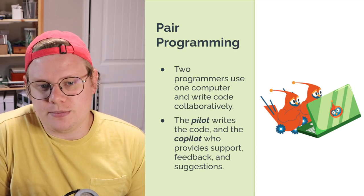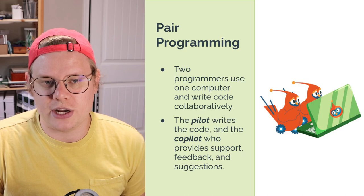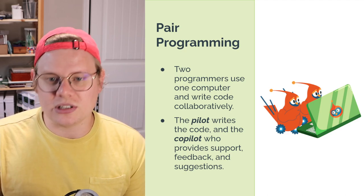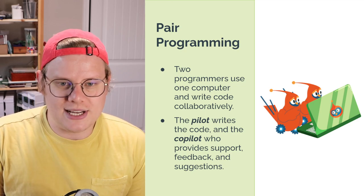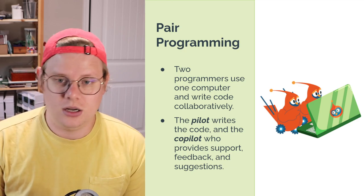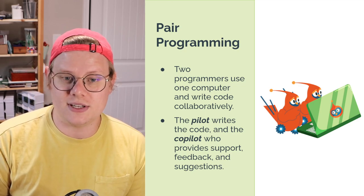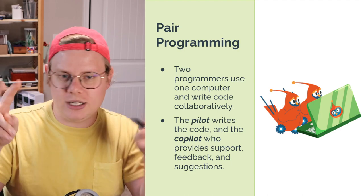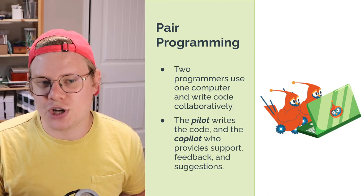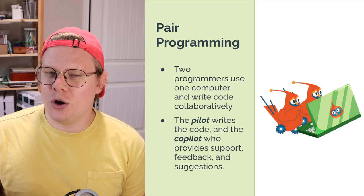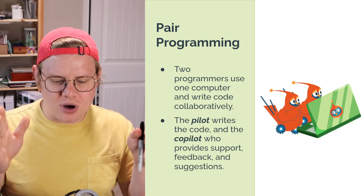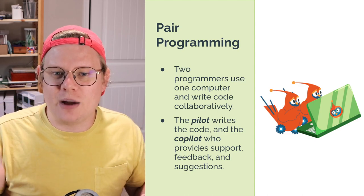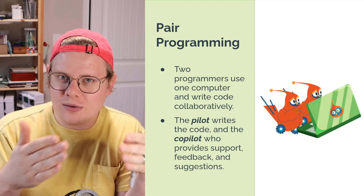A second collaboration paradigm useful for computing educators is pair programming. This is where two programmers use one computer and write code collaboratively. Usually, you would assign students roles — one student is the pilot who writes the code, and the other is the co-pilot who provides support, feedback, and suggestions. This is sort of like code review, except they are working together on the same problem at the same time, rather than sharing after the fact.